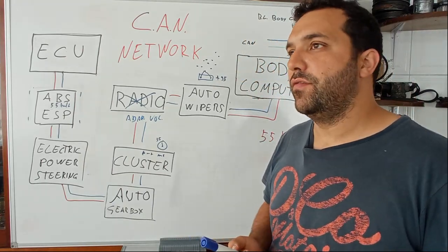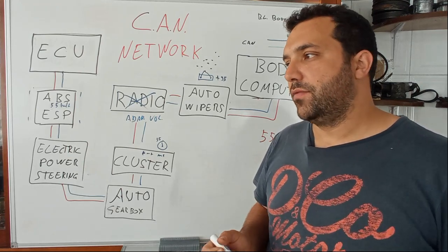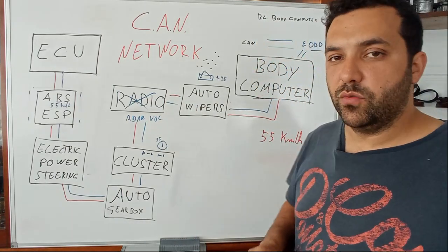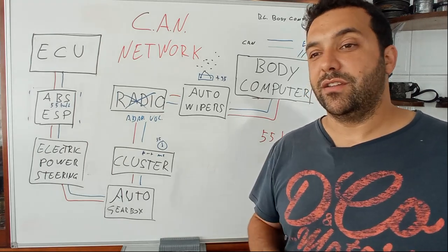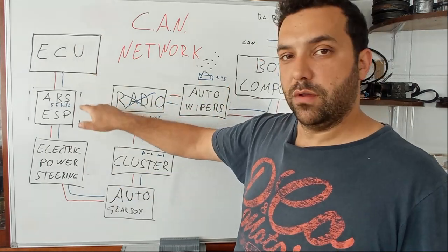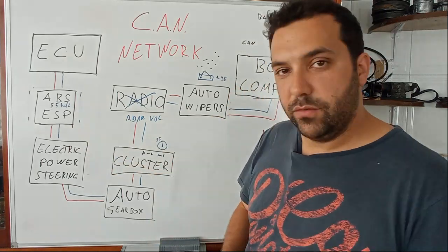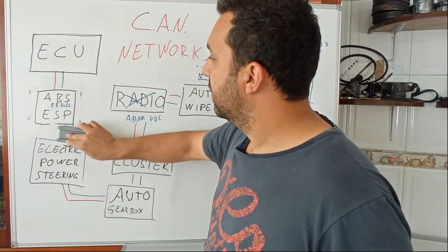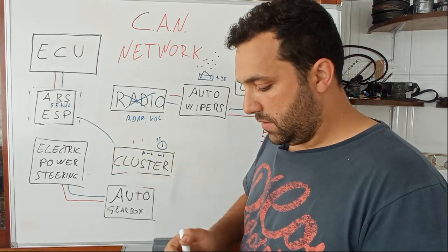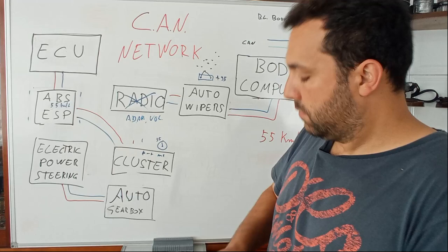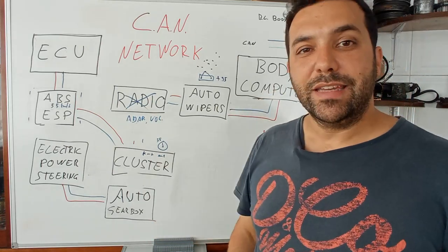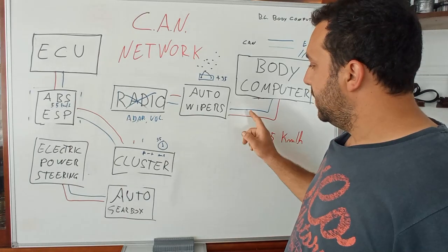On the Alfa 147, the 159, the Brera, the Giulia, the Stelvio — everything from 2005 up uses CAN network. Going down to the 156, only the second series of the 156s has CAN network, and only between the ECU and the ABS, and some of them to the cluster. So on the 156 you have partial CAN, while the 147 and up have it absolutely everywhere.